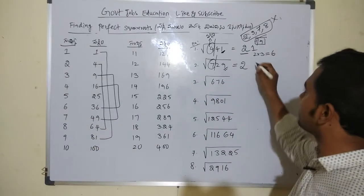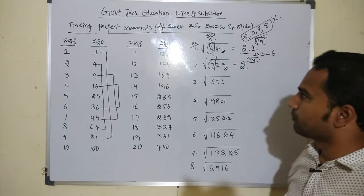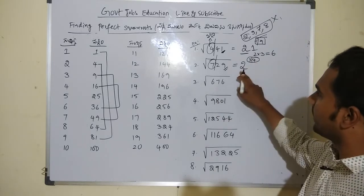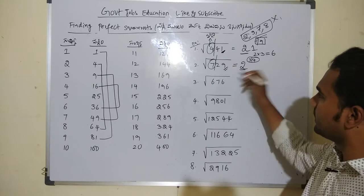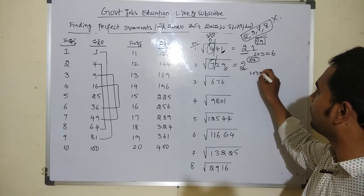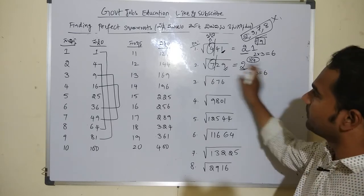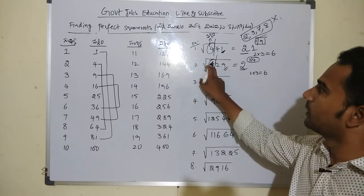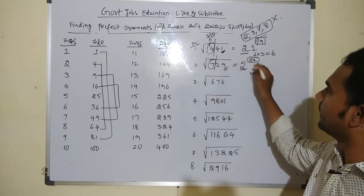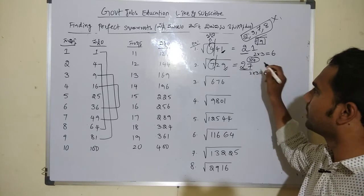We have two chances: 23 and 27. To find which is correct: 2 multiplied by the next number 3 is 6. The left side is 7, and 7 is greater than 6, so we take the greater number. The answer is 27.